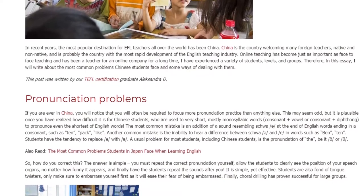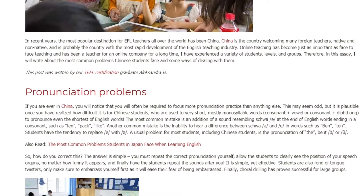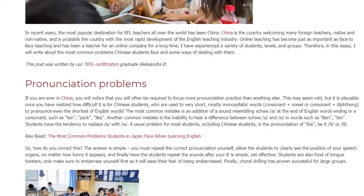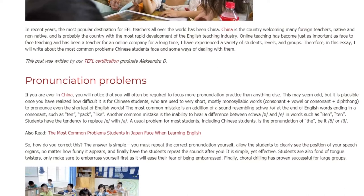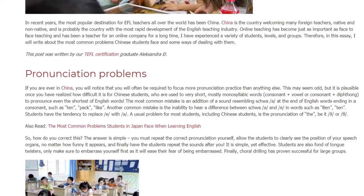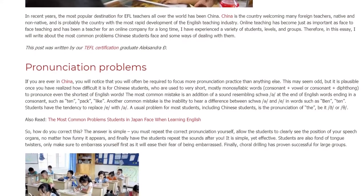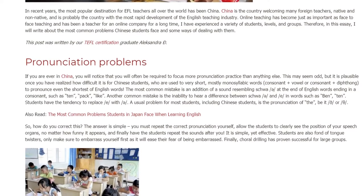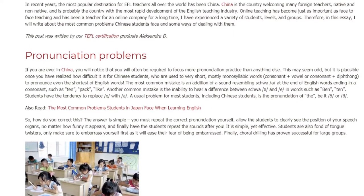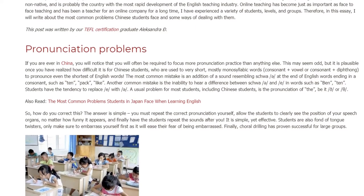The most common mistake is an addition of a sound resembling the schwa at the end of English words ending in a consonant, such as 'ten,' 'pack,' and 'like.' Another common mistake is the inability to hear a difference between the schwa and other vowel sounds, such as in 'ben.' Students have the tendency to replace one with the other. A usual problem for most students, including Chinese students, is the pronunciation of the 'th' sound.